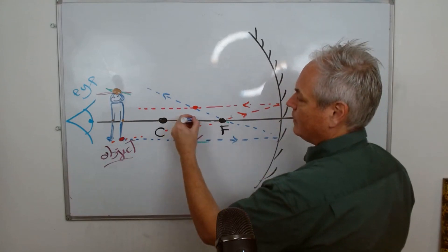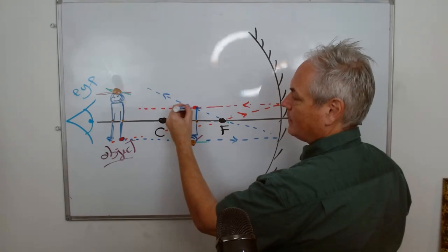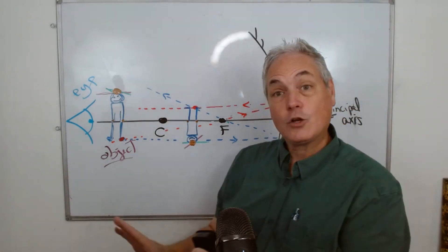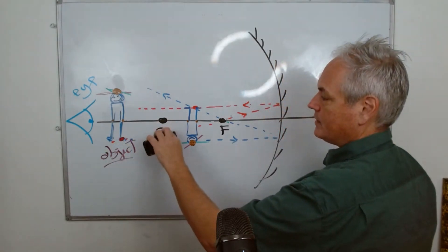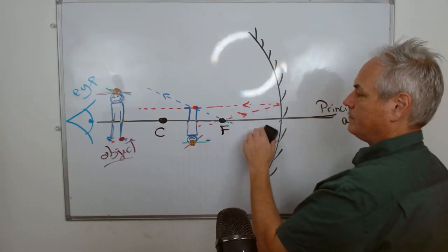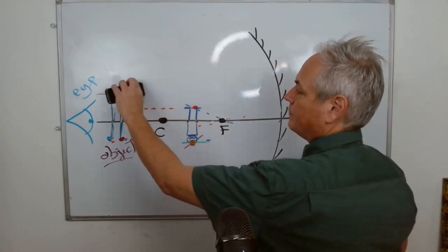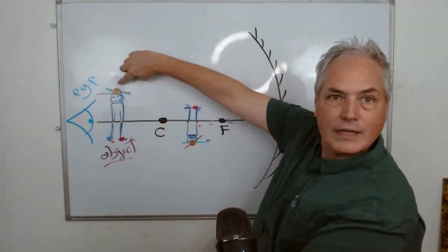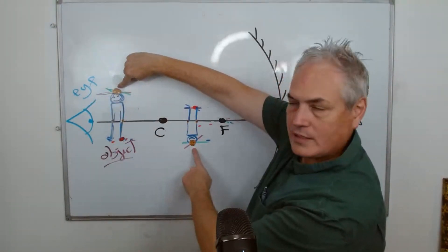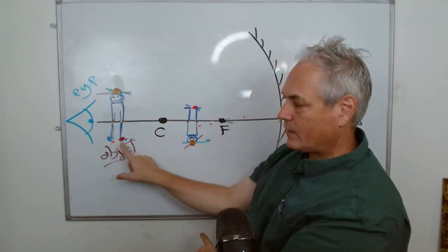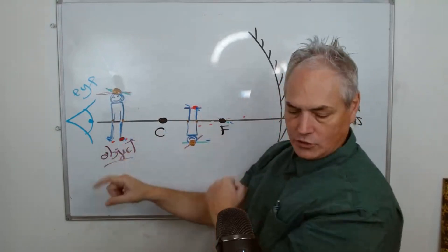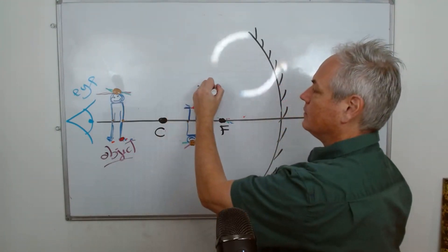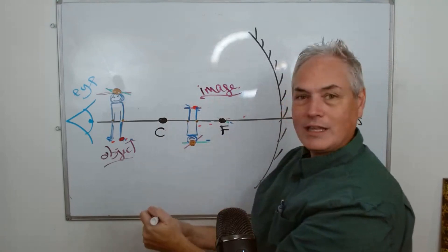We have the legs here, which means our other leg is right there. Taking away all the busy rays, we have the intersection of two rays of light for the head, and intersections for the feet. So I now have my complete image — my object here, and my image there.